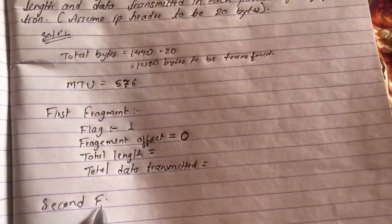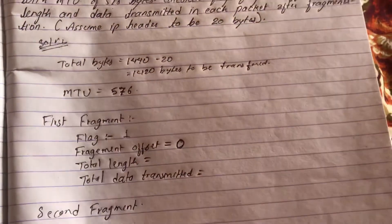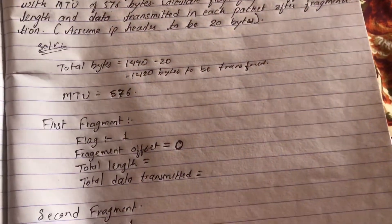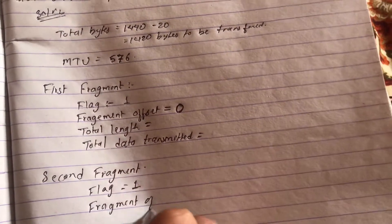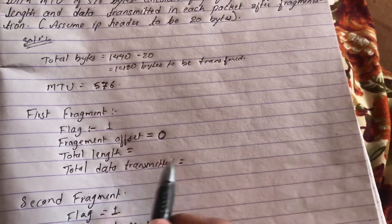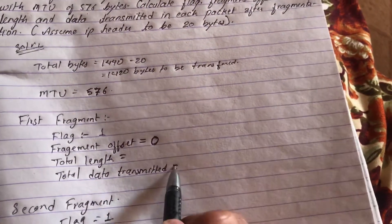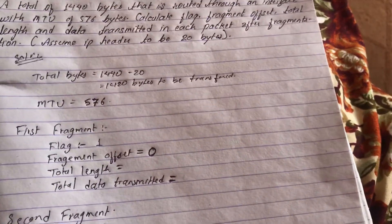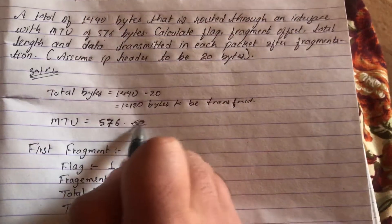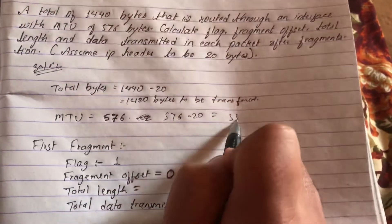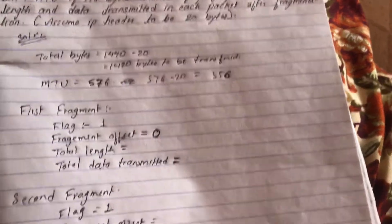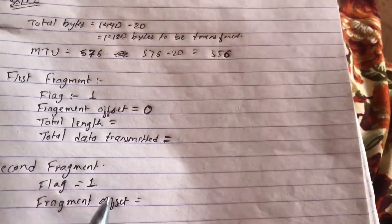For the second fragment, the flag is again 1 because there is still one more fragment remaining. The fragment offset of the second fragment equals the total data transmitted in the first fragment divided by 8. To find that, we start with the MTU of 576 and subtract the 20-byte IP header: 576 minus 20 equals 556 bytes of data capacity.